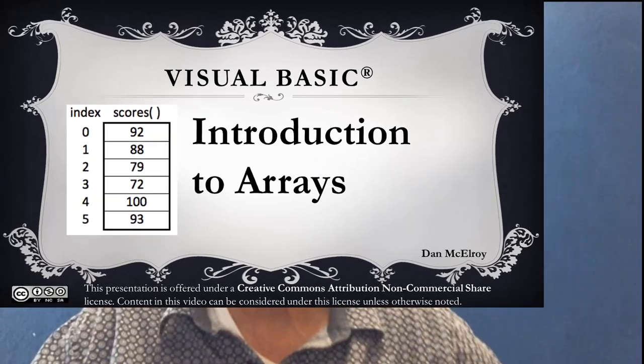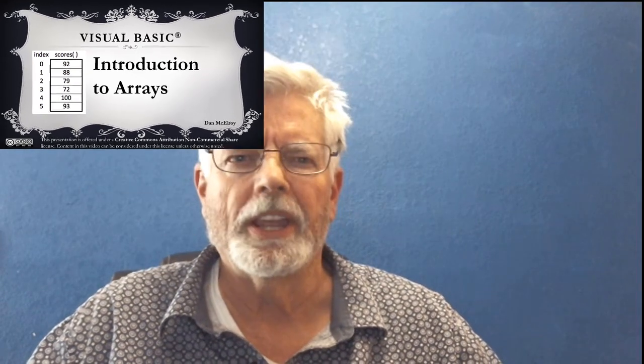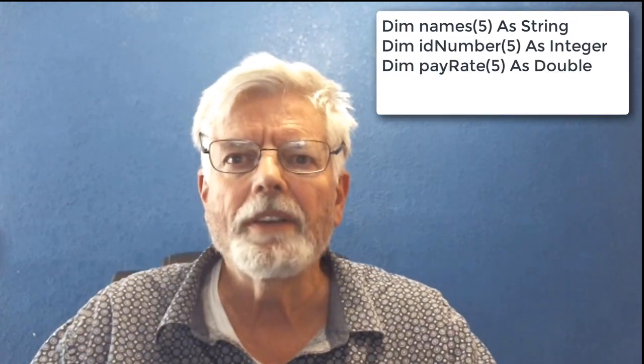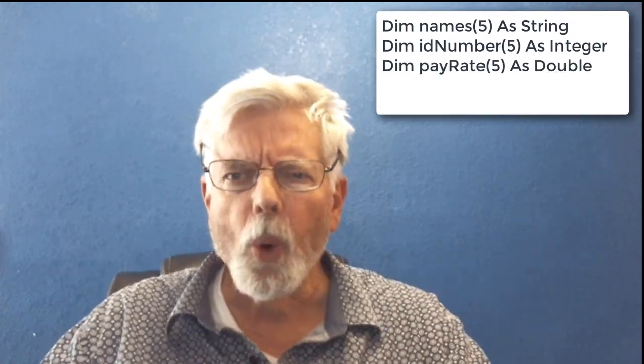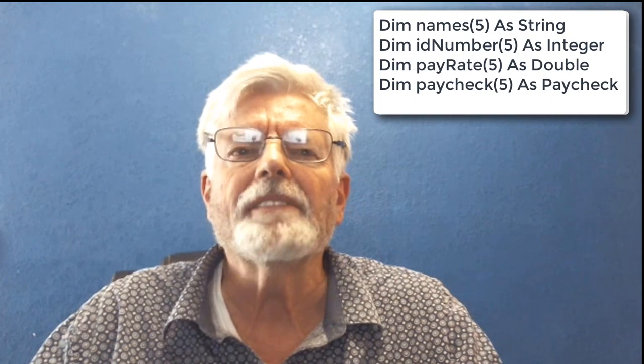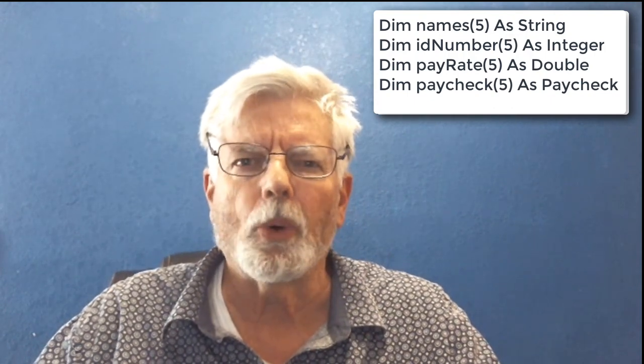Hello, programmers! Dan McElroy here. An array is a group of items, all of which must be the same data type. For example, we can have an array of strings, or an array of integers, or an array of doubles. We can even have an array of objects in object-oriented programming with Visual Basic.